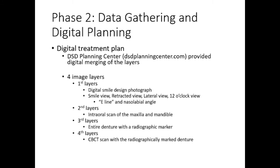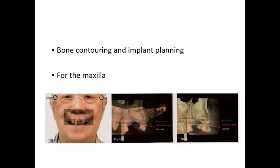The first image layer included the digital smile design with photograph smile view, repose view, lateral view, and 12 o'clock view. The lateral view was used to assess the E-line and nasolabial angle. The second image layer was the intraoral scan of the maxilla and mandible. The third image layer comprised the scan of the entire denture with a radiographic marker. The fourth image layer consisted of the CBCT scan with the radiographically marked denture placed intraorally. After all layers were merged by the planning center, the clinician could perform bone contouring and implant planning.